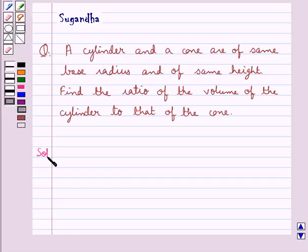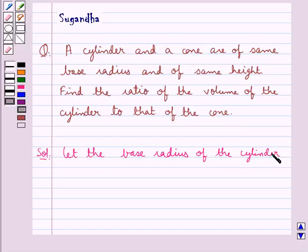Let's proceed with the solution. Let the base radius of the cylinder and the cone be equal to R. Since it's given that the cylinder and the cone have the same base radius, we have taken that to be R.